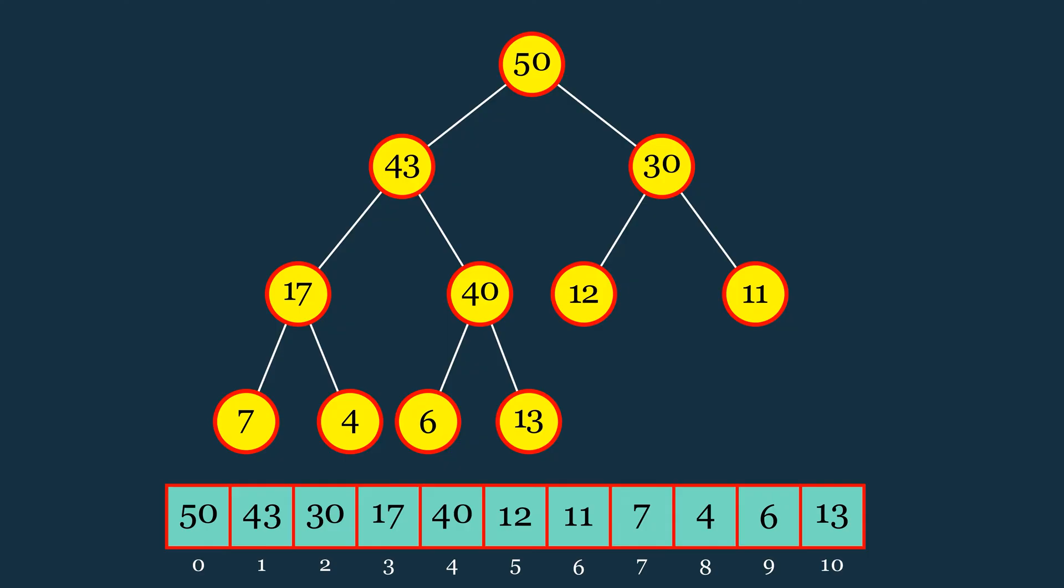Now, deleting an element in a max heap typically means removing the root node, which has the maximum value in this structure. To do this, we start by replacing the value of the root node with the value of the last element in the heap, in this case, 13. Then, we remove the last element, which effectively removes the original root.